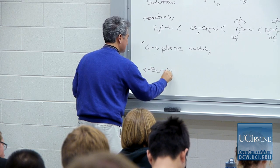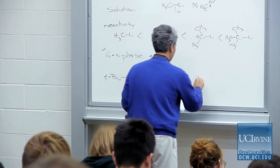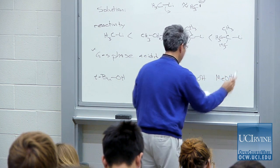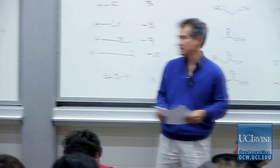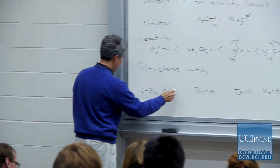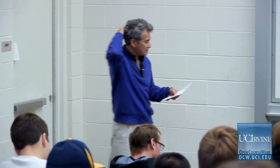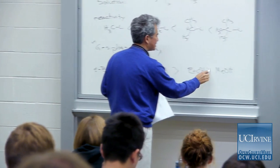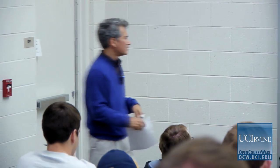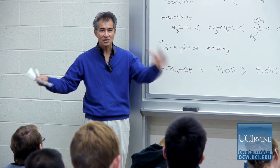Gas phase calculations give the opposite order from what you see in solution. T-butanol is actually more acidic than isopropanol in the gas phase, which is more acidic than ethanol, which is more acidic than methanol — the reverse of solution phase. T-butoxide turns out to be more stable than methoxide in the gas phase. This is similar to what you see with cations.